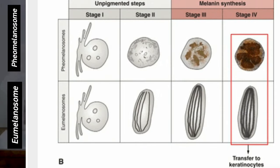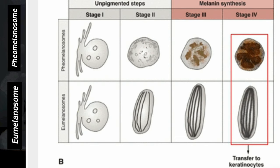The fibrillar matrix is properly arranged in eumelanosomes, whereas in pheomelanoosomes it is loosely arranged. Eumelanosomes are bigger in size, elliptical, and have an organized fibrillar matrix. Pheomelanoosomes are smaller in size, circular in shape, and have a loose fibrillar matrix. Eumelanin is formed in eumelanosomes, and pheomelanin is formed in pheomelanoosomes.